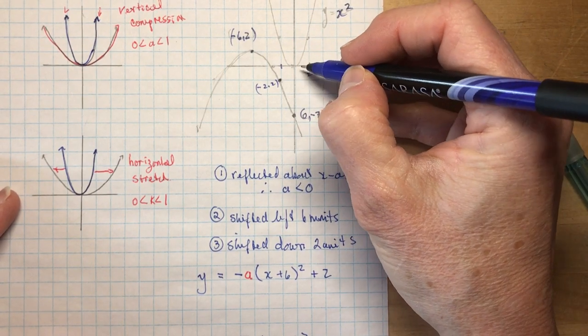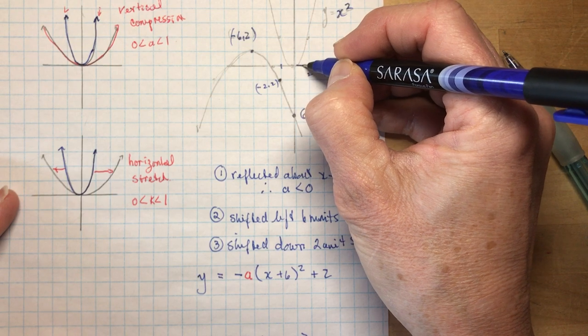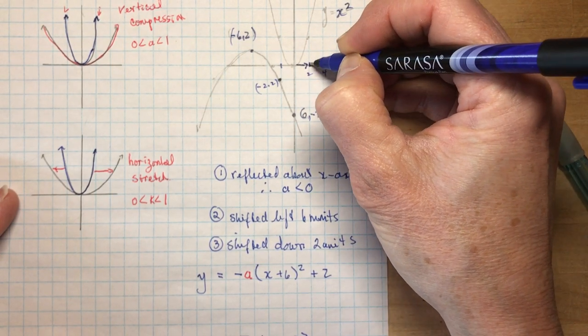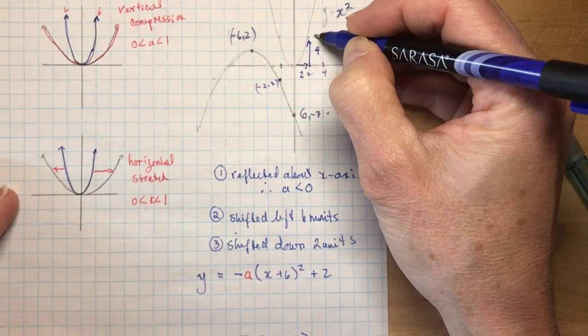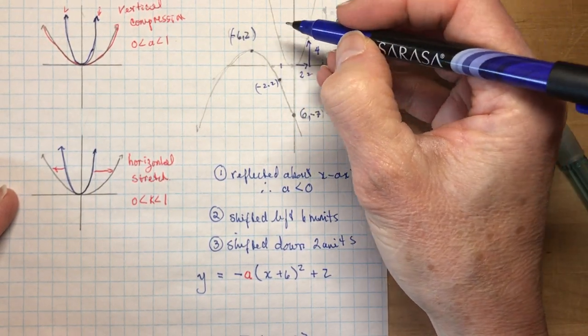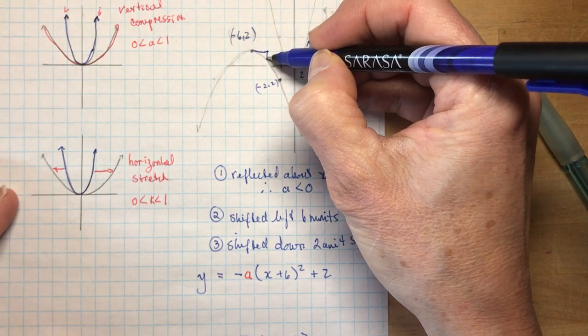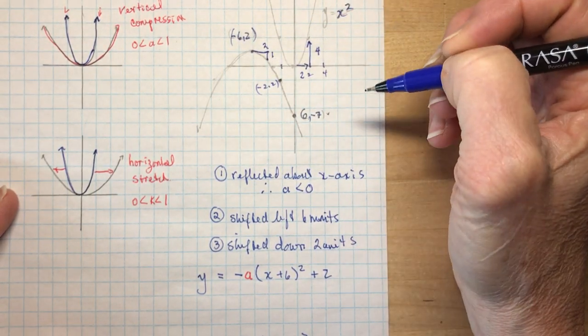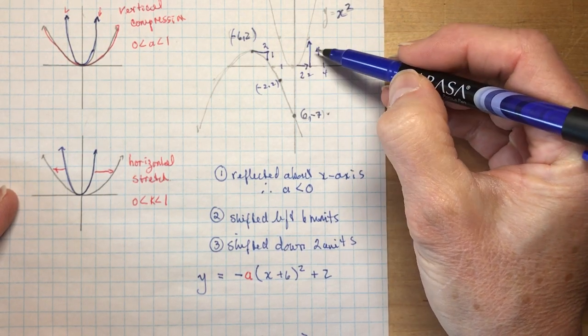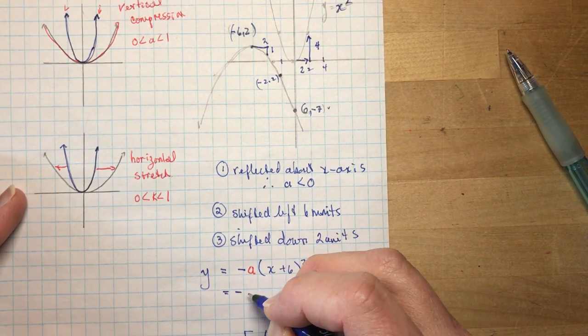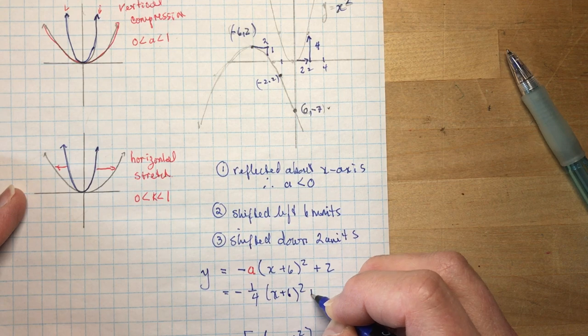For the regular parabola y equals x squared, if I go over 2 units to the right, I go up 4. In this graph, however, if I go 2 to the right, I'm only going down 1. So that means I've compressed it by 1 quarter. That's the easy one, the vertical one. Minus 1 quarter x plus 6 squared plus 2.